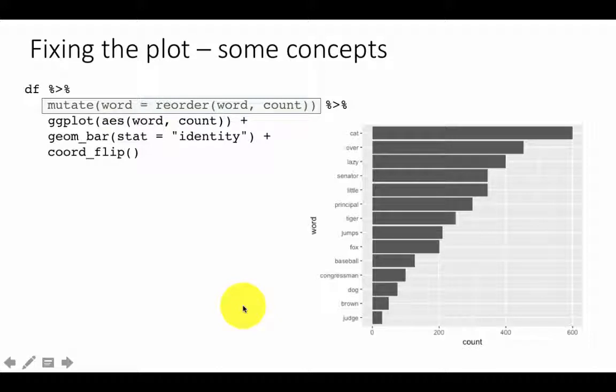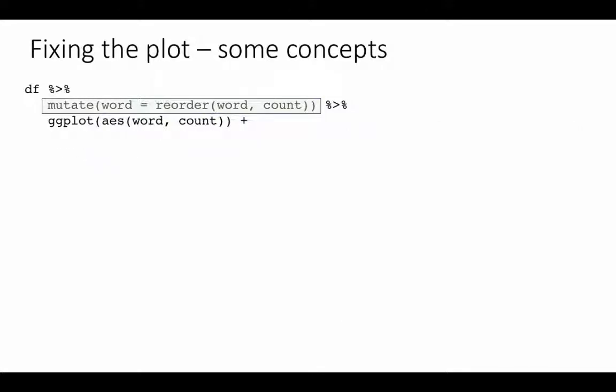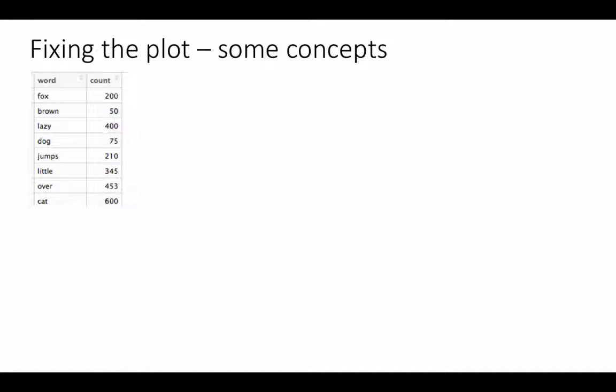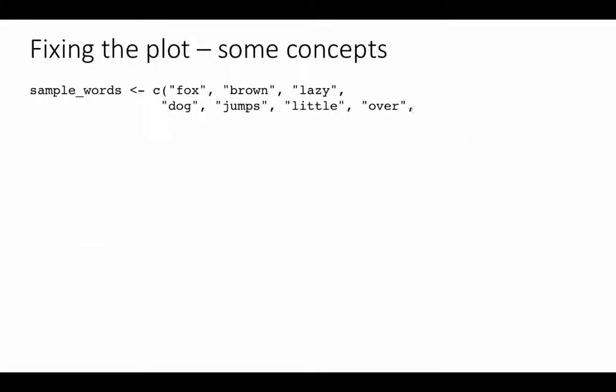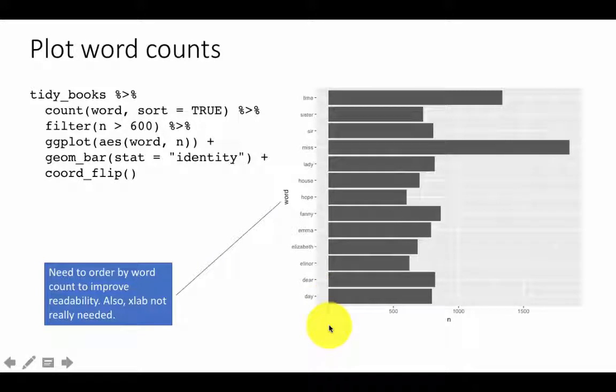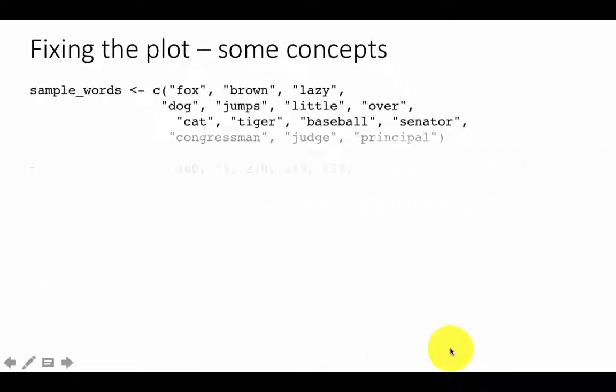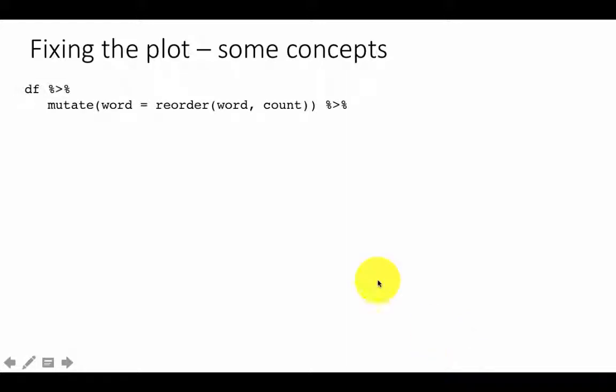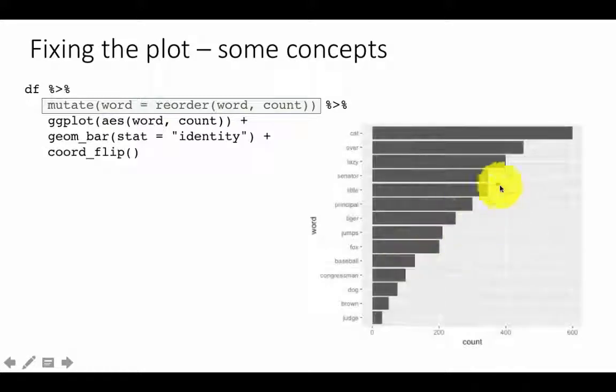So this is really what we want to achieve with our Jane Austen books as well. Remember, the reason we are coming to this is because we saw this plot, and we want to now change the plot so that the bars are in proper order. So that's what we were trying to do, and we saw that the function reorder is what is going to help us to achieve that. So when we did that, it worked well for our small example. Now let's translate this idea to our original problem.